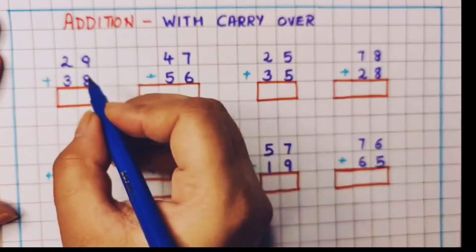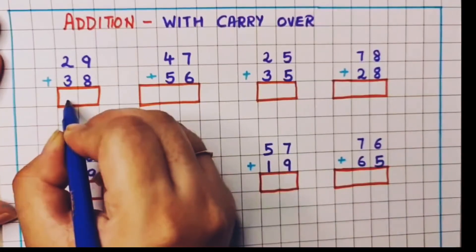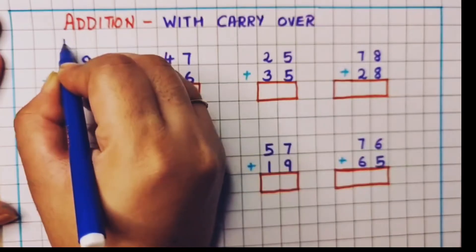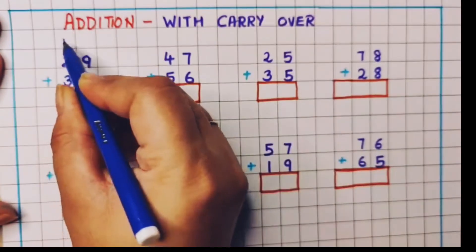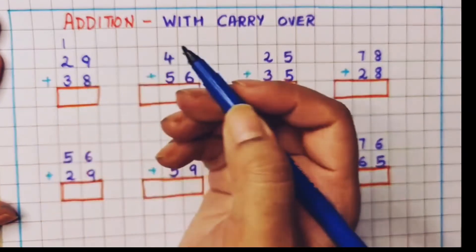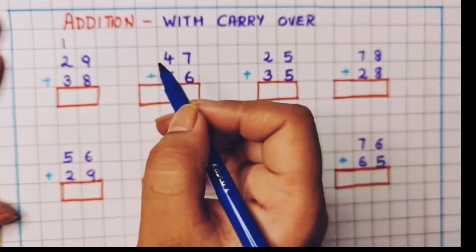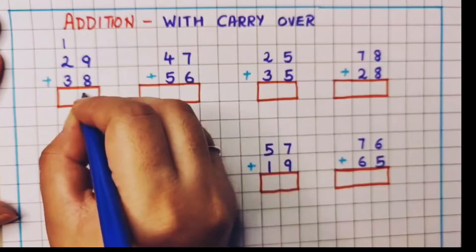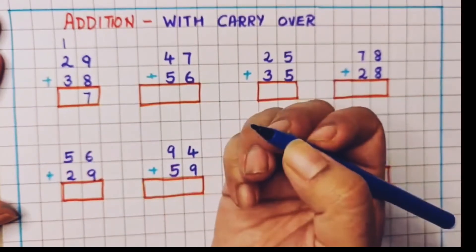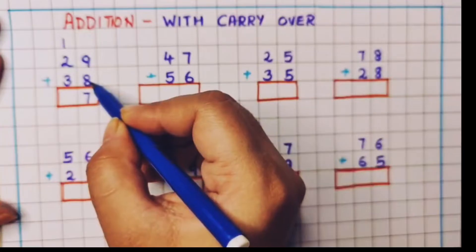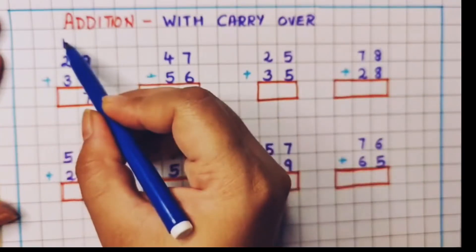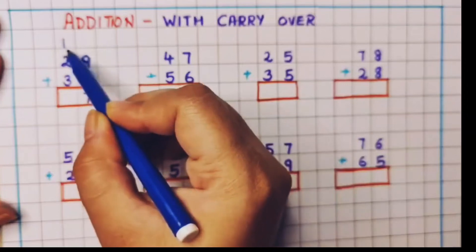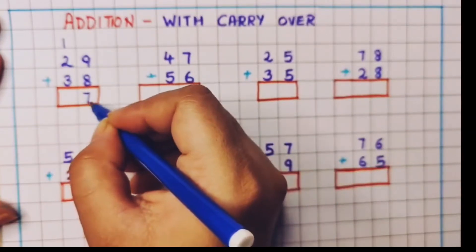Now 17 — how do we write it? We cannot write 1 here and 7 here. What we will do? We will write 1 over here, carrying over to the tens place, because 17 is a two-digit number. So 1 will come in the tens place and 7 will come in the ones place. 1 from the 17 will go as a carry over above the tens place and 7 will come down.